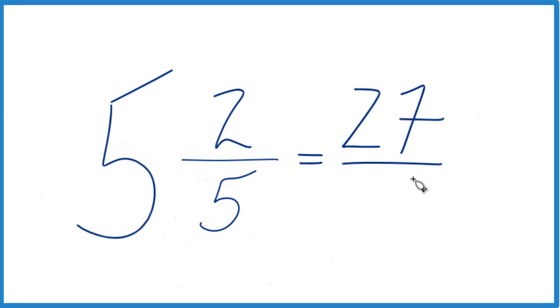That's the numerator. Then you just bring the 5 across, that's our denominator, and 27 fifths, that's the improper fraction for the mixed number, 5 and 2 fifths.